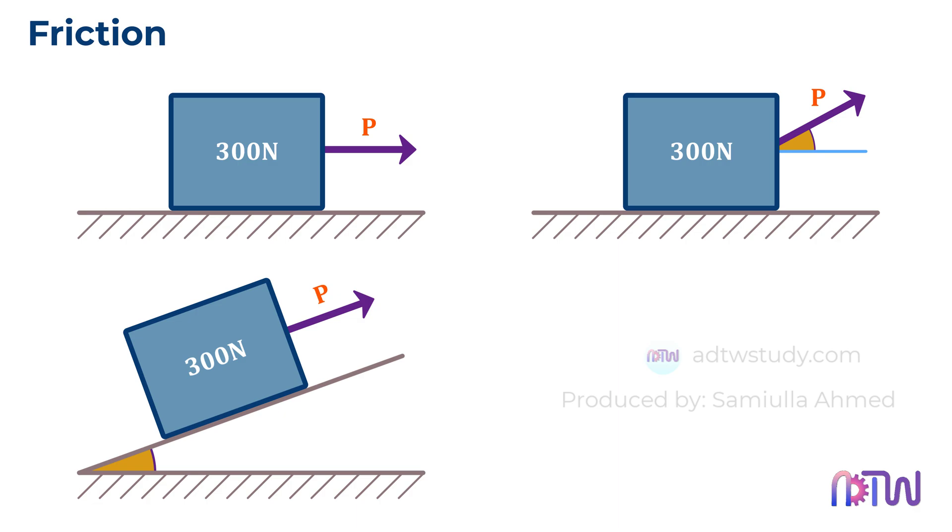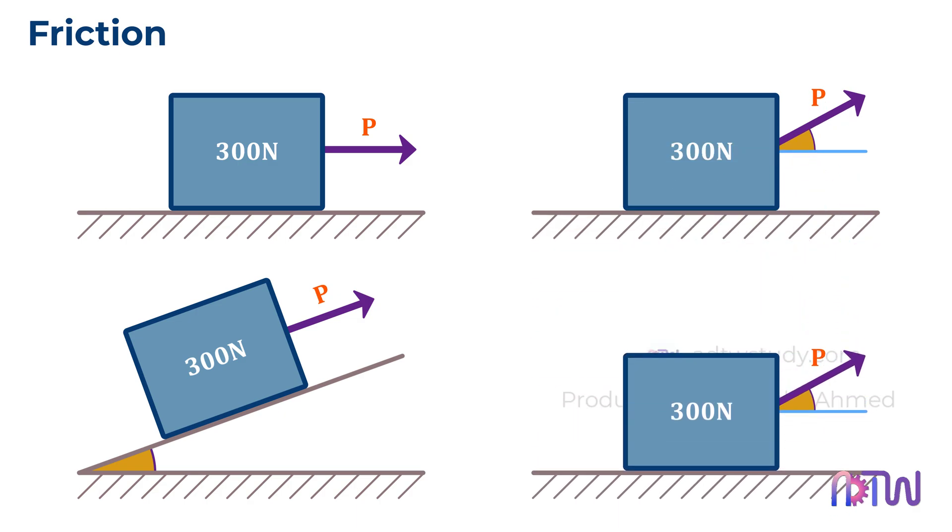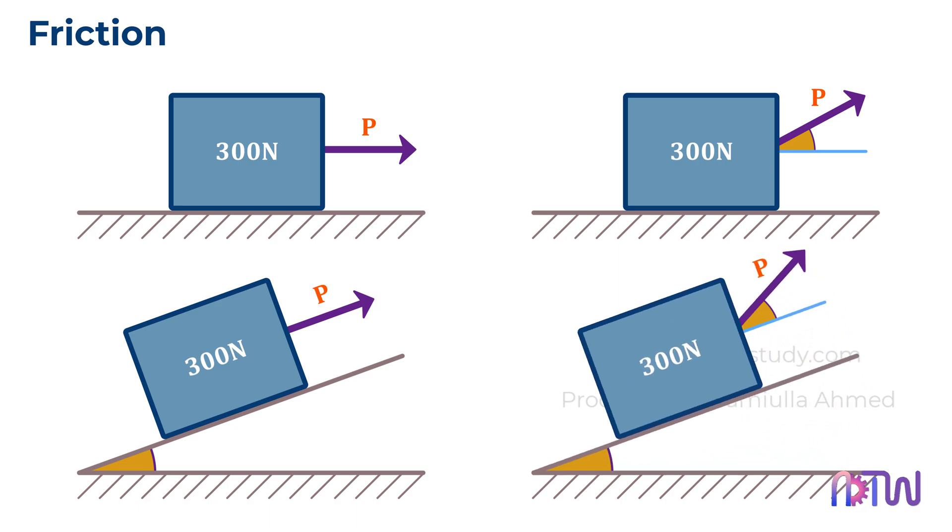And another condition is, what if both conditions happen together? Which means the pulling force is at an angle with the horizontal, and the surface on which the box is resting is also inclined. How do we find out the force required in this condition? Watch our next videos to find out how to calculate the value of P in these different scenarios.